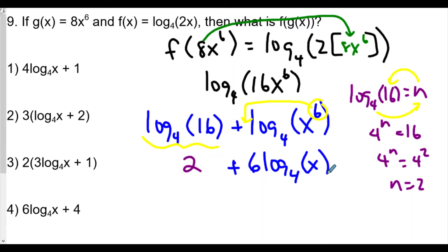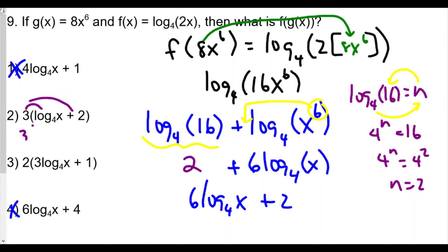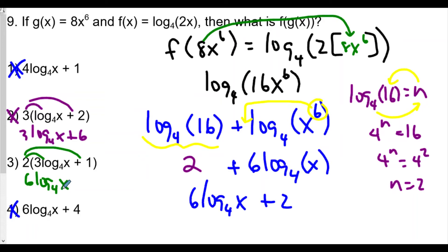So we have 6 log base 4 of x plus 2. Looking at the choices: choice 4 has plus 4, so that's not it. Choice with 4 log base 4 of x plus 1 doesn't match. Choice 3 has 3 times log base 4 of x plus 2 — if we distribute, 3 times log base 4 of x plus 3 times 2 gives 3 log base 4 x plus 6, that's not it. But 2 times log base 4 of x plus 2 — distributing gives exactly 2 log base 4 of x plus 2, which matches. Our answer is choice 3 for number 9.